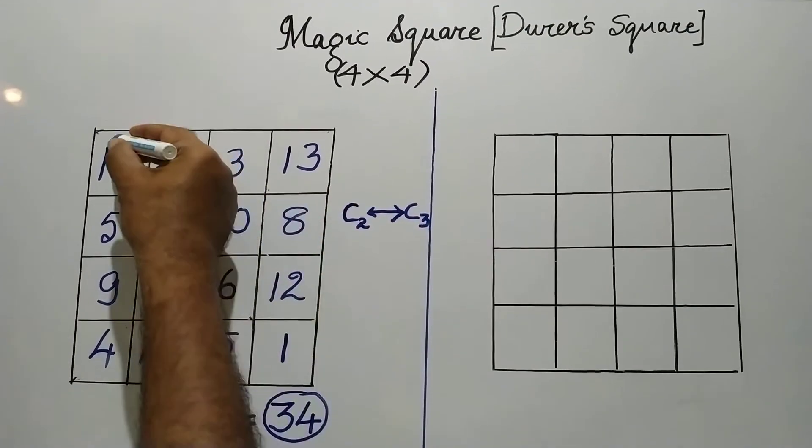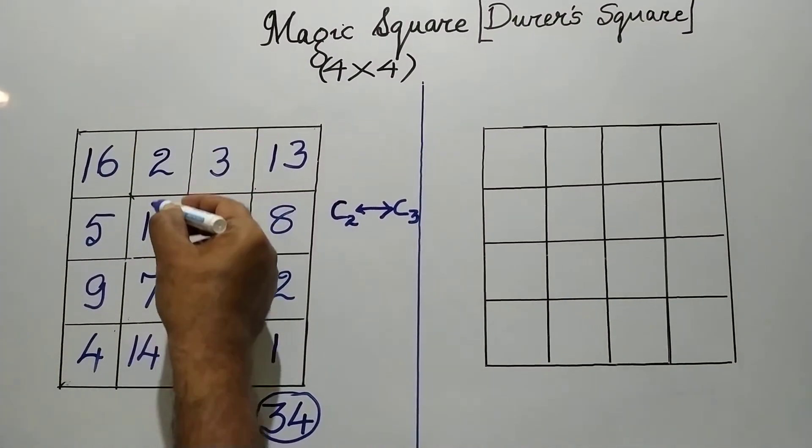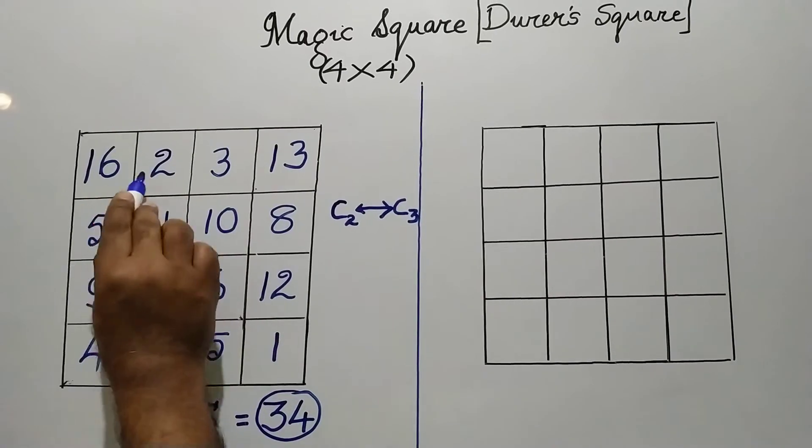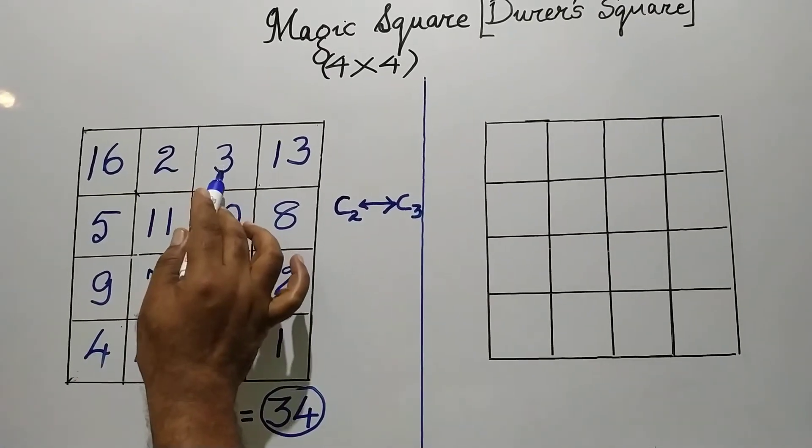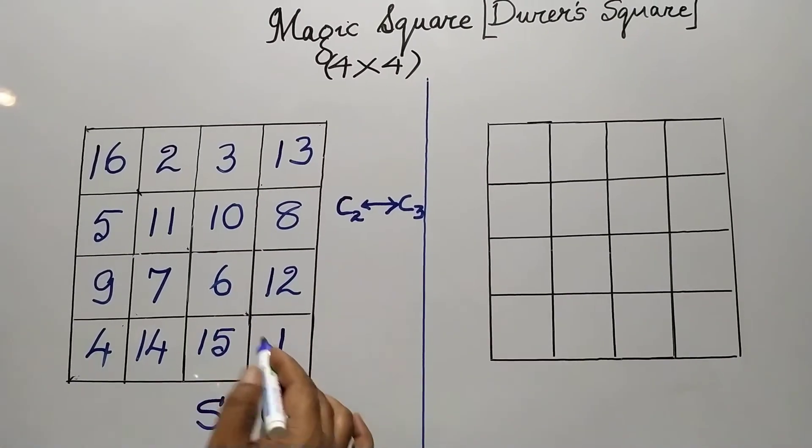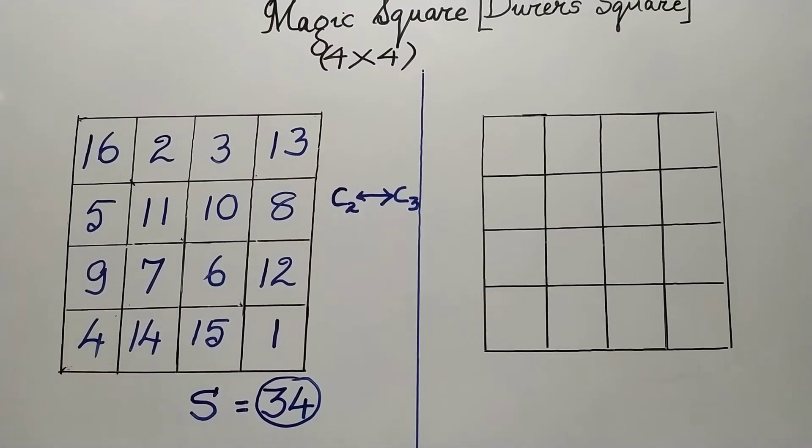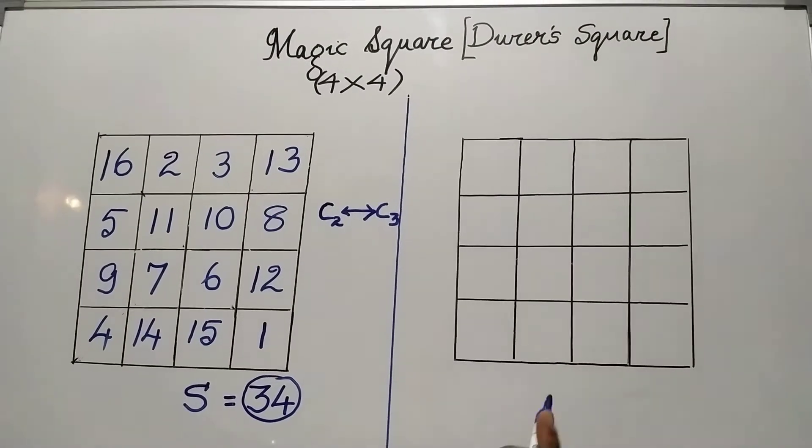The first column, I will keep it as it is. Instead of the second column, I will write the third. Instead of the third, I will write the second. And the fourth column will be retained as it is. I will start.